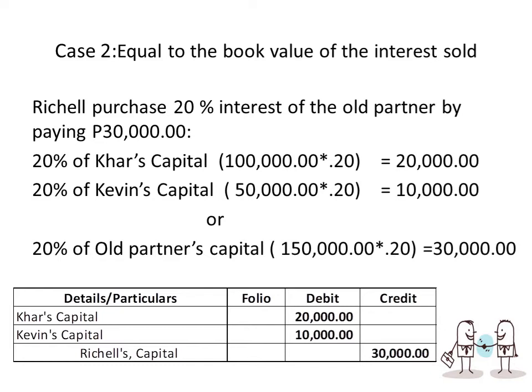Whatever the difference between the purchase price and the book value, it is not reflected in our partnership books — because of the entity concept that the partner and the partnership are separate from the business. Therefore, whether the partner accepts more or less, the recording is still as if the purchase price equals the book value, unless there is a statement specifying revaluation of assets or recognition of goodwill. For example, if Richelle paid $40,000, it would still be recorded at $30,000 because she is paying not to the partnership but to the partners Kar and Kevin directly.